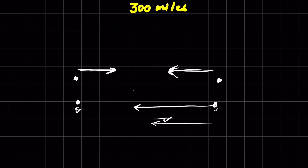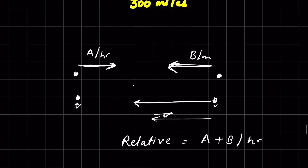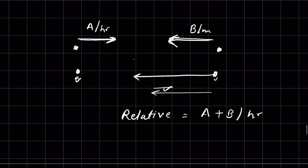This also means they are adding their speeds. If A's speed is 'a' miles per hour and B's speed is 'b' miles per hour, and when they are traveling towards each other, this is called relative speed. Their relative speeds add, and that becomes a plus b miles per hour.